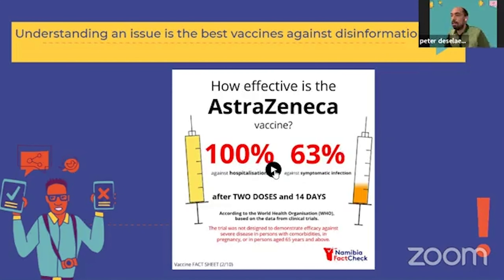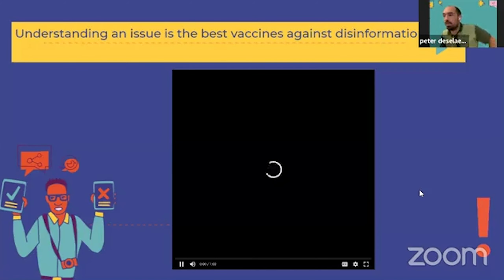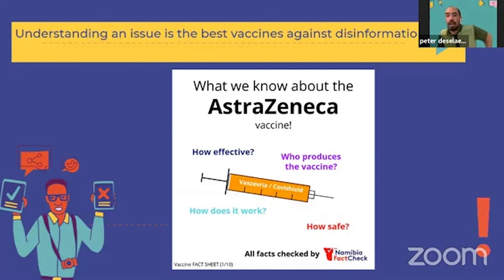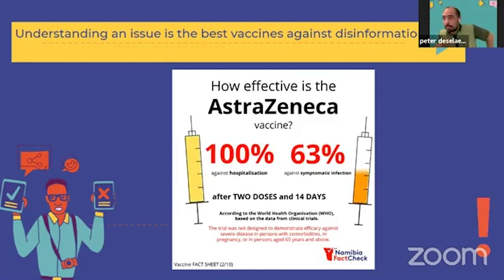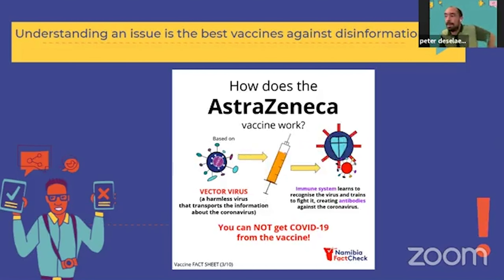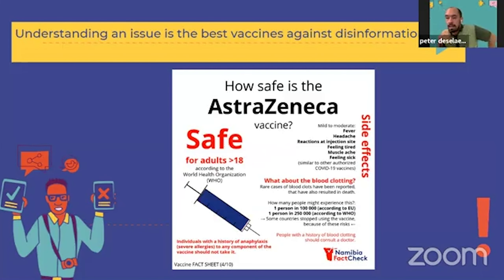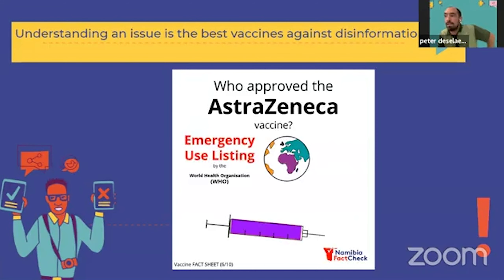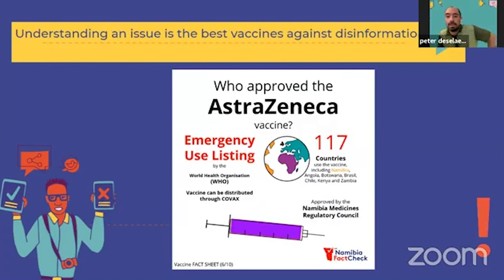An example is shown of what Namibia FactCheck produced and spread on social media to share facts around the AstraZeneca vaccine, which is one of the mainly used vaccines in Namibia. The question is raised whether this kind of content should come mainly from government and fact-checking sources, or whether journalism has a role in explaining things like vaccine safety.